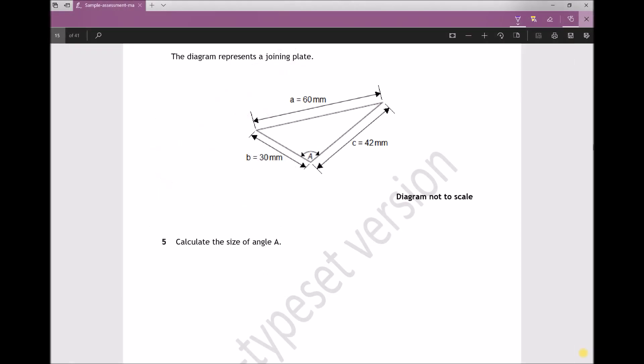Question 5 states the diagram represents a joining plate, and what we have is a non-right angle triangle. We're asked to calculate the size of angle A. If we look at the diagram, we can see that we know the three lengths but we don't know any of the angles.